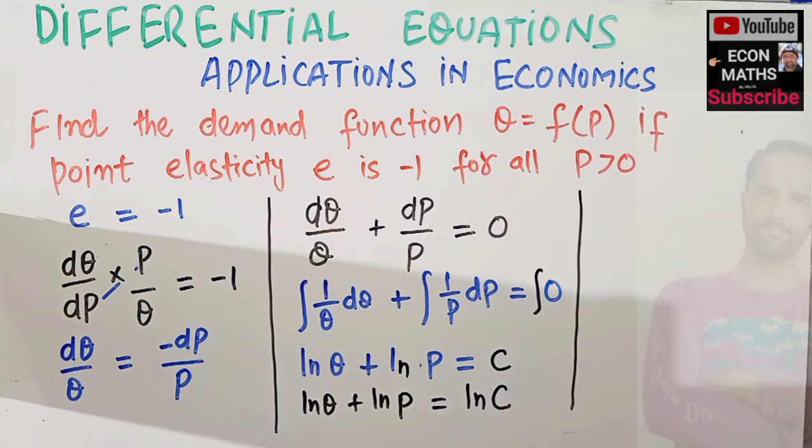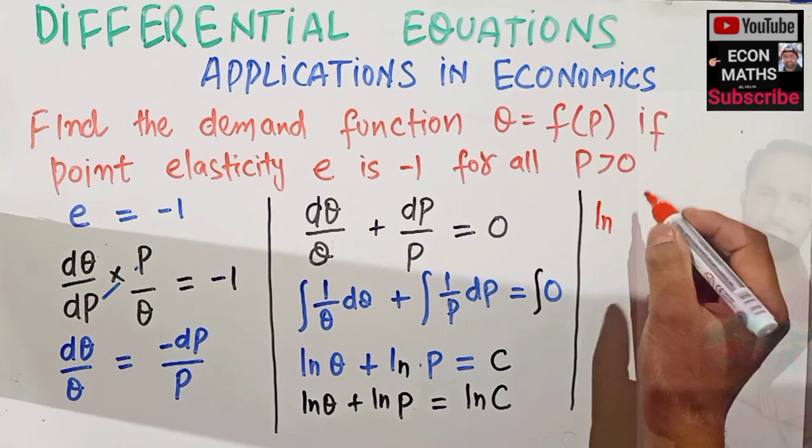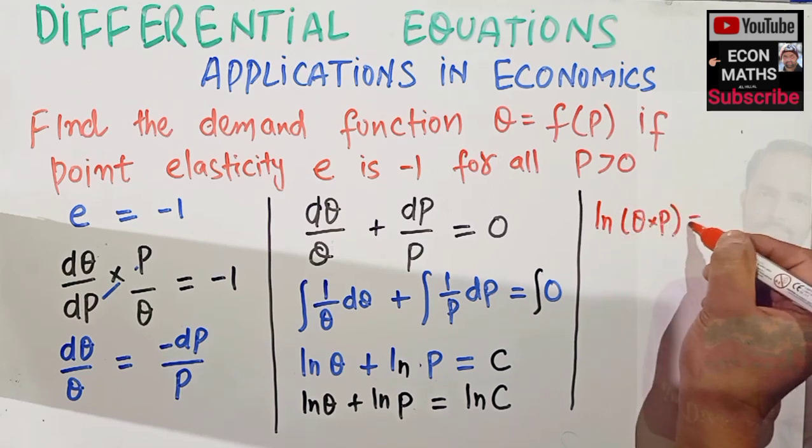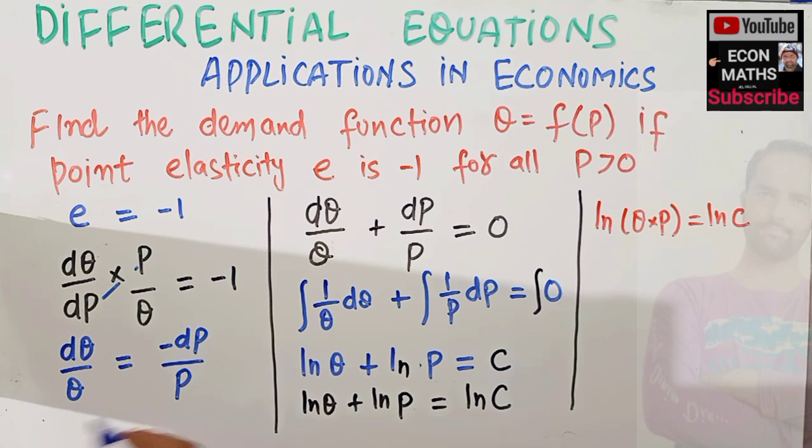So ln Q plus ln P I can write it in this fashion, ln Q times P is equal to ln C. We are using the simple logarithm rule here, that means if we have ln a plus ln b it is actually equal to ln a times b. This is a very simple law from the law of logarithm.